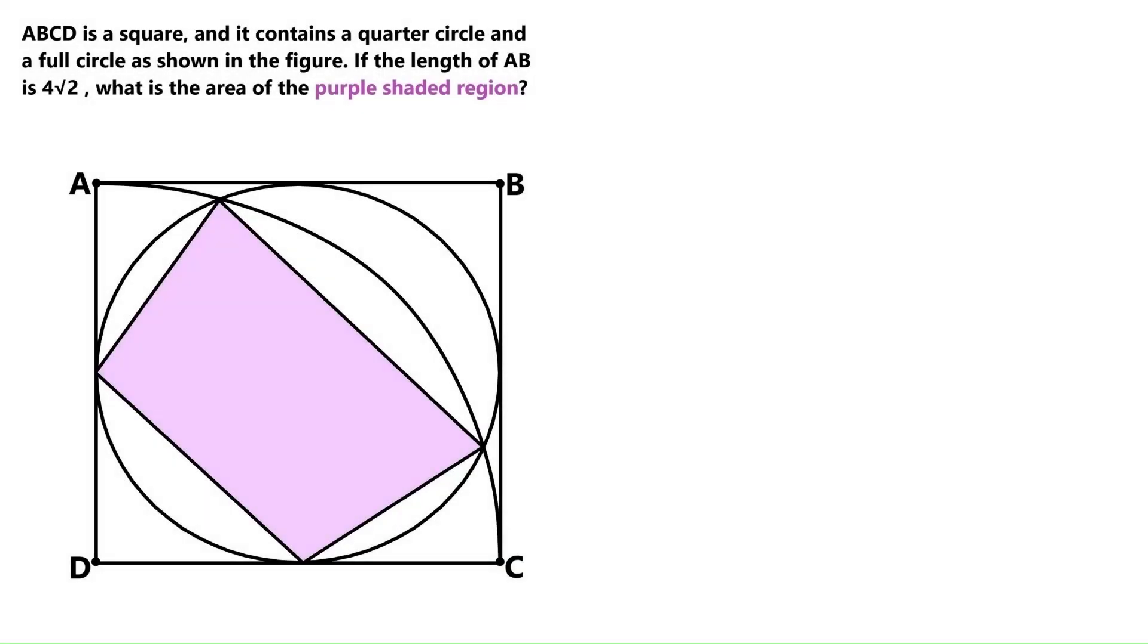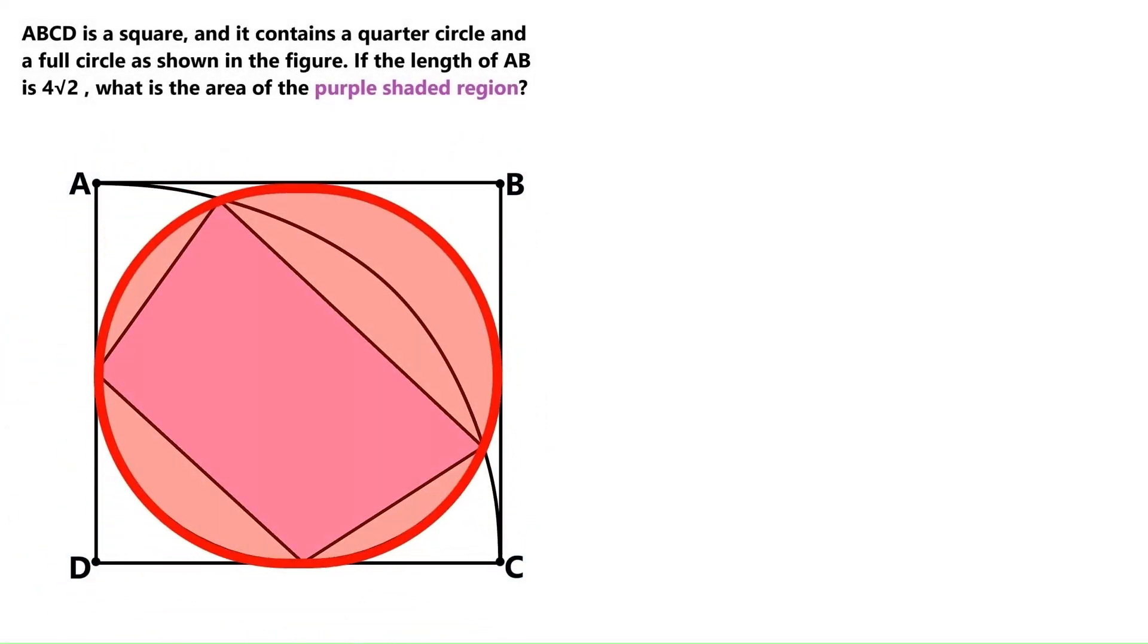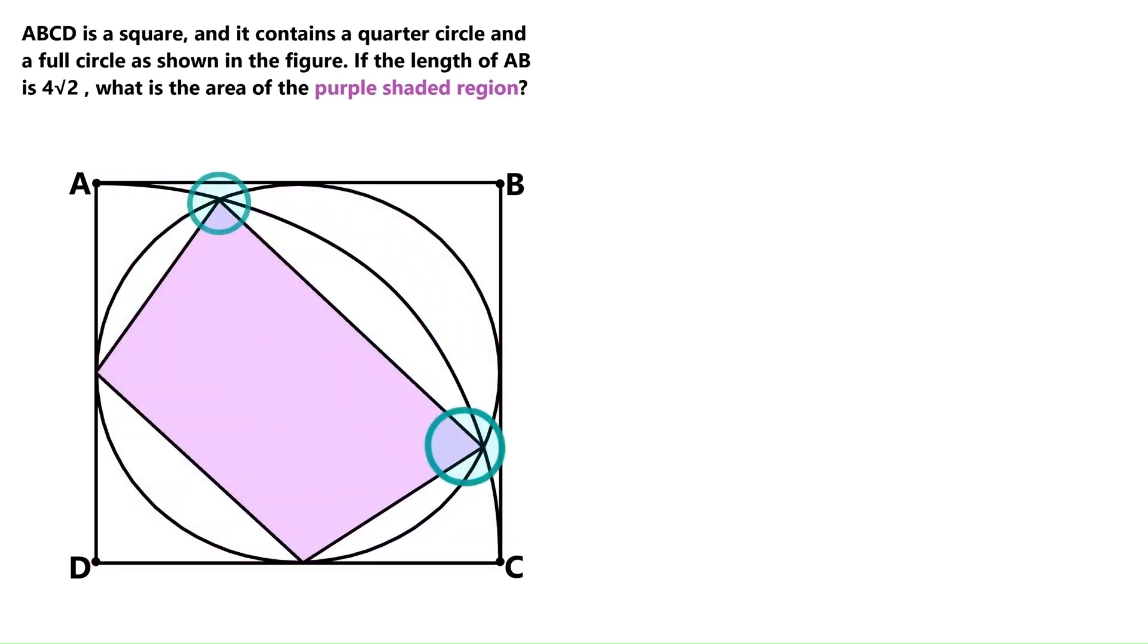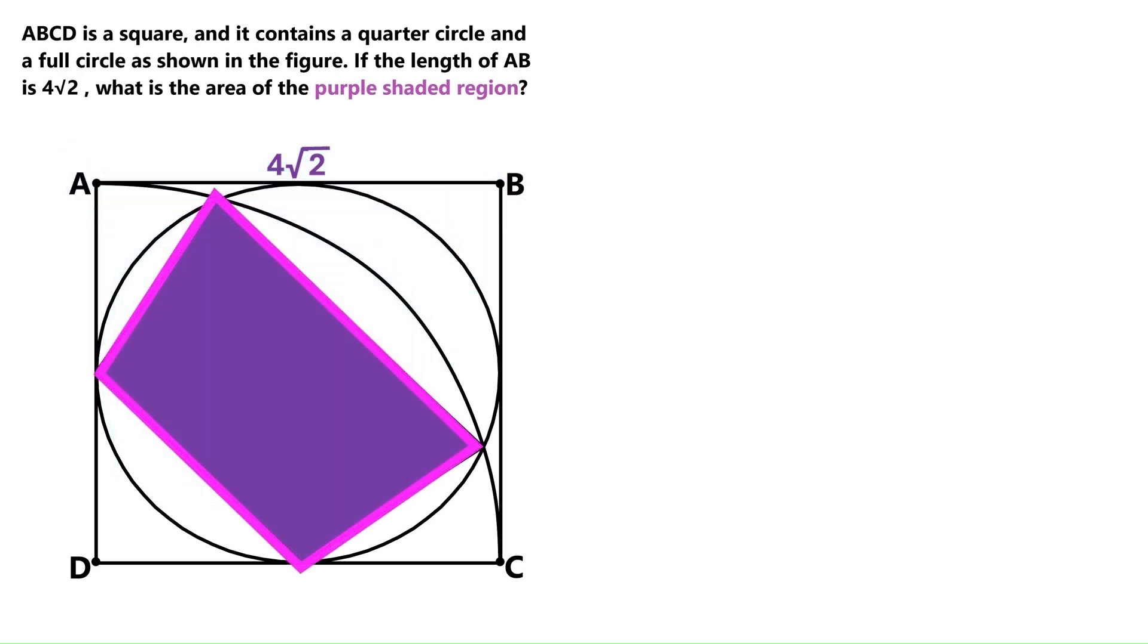In this super cool geometry problem, we've got this square ABCD, and this full circle is tightly fitted into the square. It's overlapping with this quarter circle, also fitted inside the same square, and they intersect at these points. The only distance we know is the side length of the big square, which is 4 times root 2, and we are asked to find the area of this purple region in the middle.